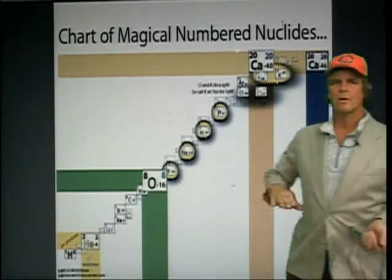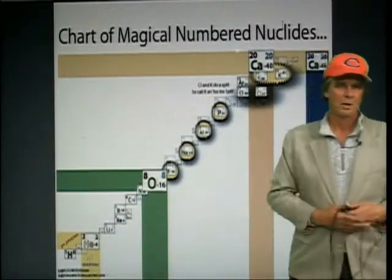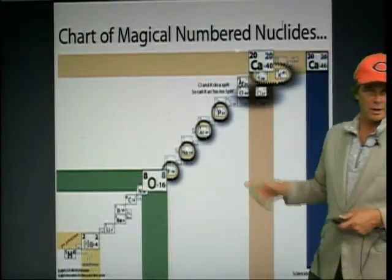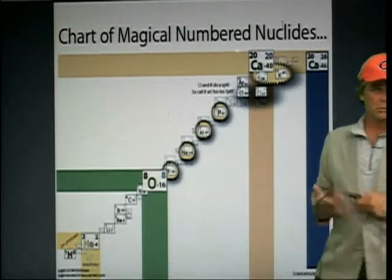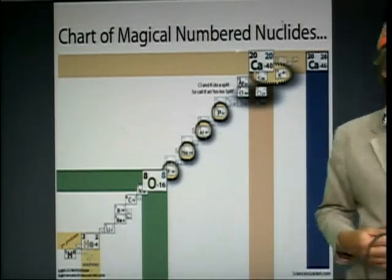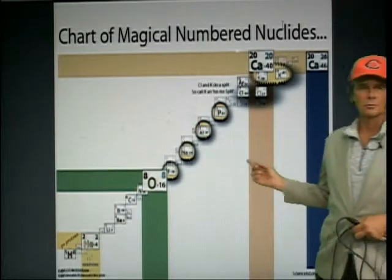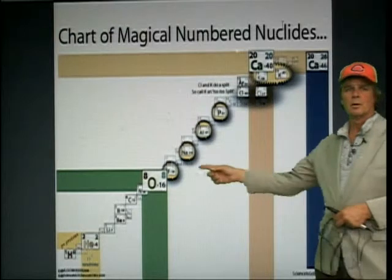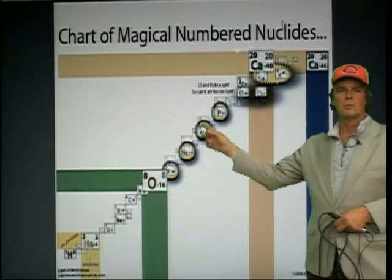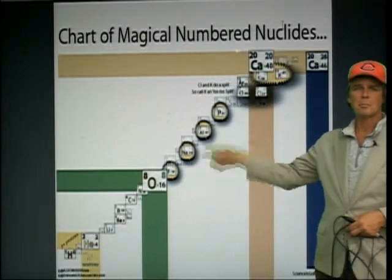It takes all the different isotopes and averages them. What I did on this chart was just to show the 100% abundances of these elements that are in between the magic numbers.